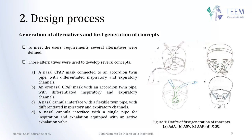With this information, we determined several alternatives that were used to develop several concepts, as seen in Figure 1. For example, the first concept is a nasal CPAP mask and another is an Ouro nasal CPAP mask, both with a cordial twin pipe. We also have C, a nasal cannula interface with a flexible twin pipe, and E, a nasal cannula interface with a single pipe. If you are interested, you can pause the video to check them in detail.